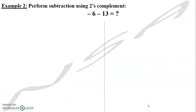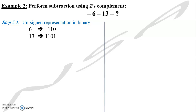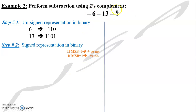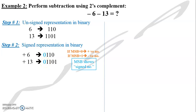We have another example: minus 6 plus minus 13. Step number one — first think about the normal unsigned representation, forgetting the sign. How do we write 6 in bits and how do we write 13 in bits? Step two: signed representation. Both 6 and 13 are given as negative, but first think of the positive number and then change it to negative. I take positive 6 and positive 13, showing zeros as the most significant bit to indicate positive numbers.